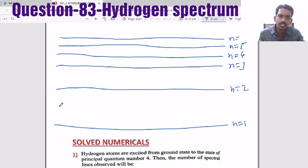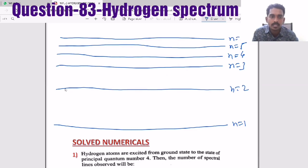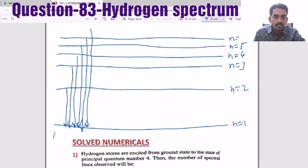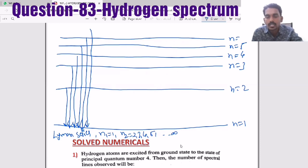When the electron is in the ground state it is stable, but when it is in any excited state, the electron tries to come back to the ground state. When the electron jumps from any higher level to the ground state, the photons emitted all together are called the Lyman series. For Lyman series, N1 is 1 and N2 can be 2, 3, 4, 5, and so on up to infinity — infinity is called the series limit.